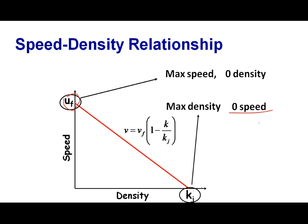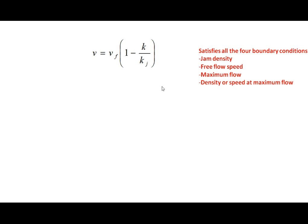Between free flow speed and jam density, speed varies linearly with density — that was the assumption made by Greenshields. The equation for this line is: V = V_F × (1 − K / K_J). This equation satisfies all four boundary conditions: you can find the jam density, the free flow speed, the maximum flow at optimum density, and the speed or density at maximum flow.